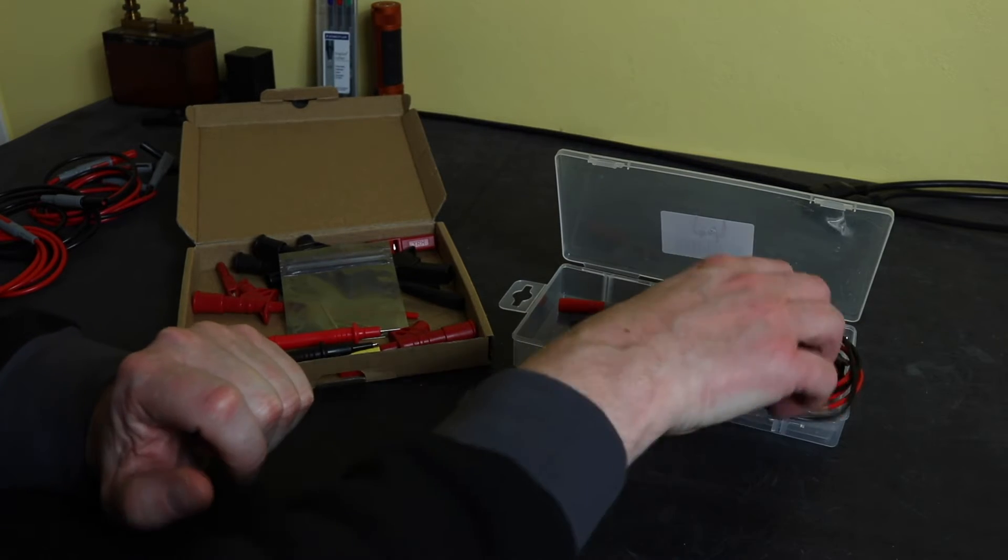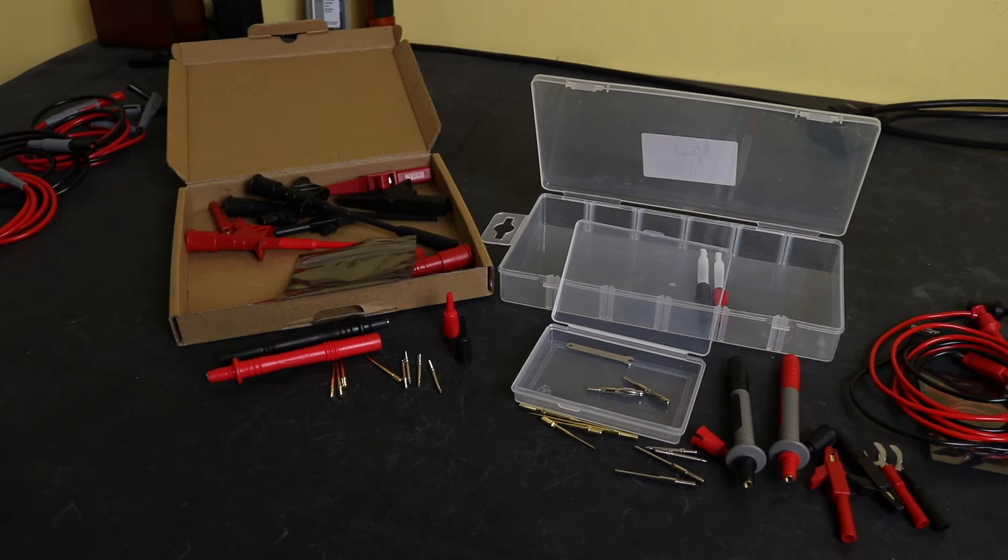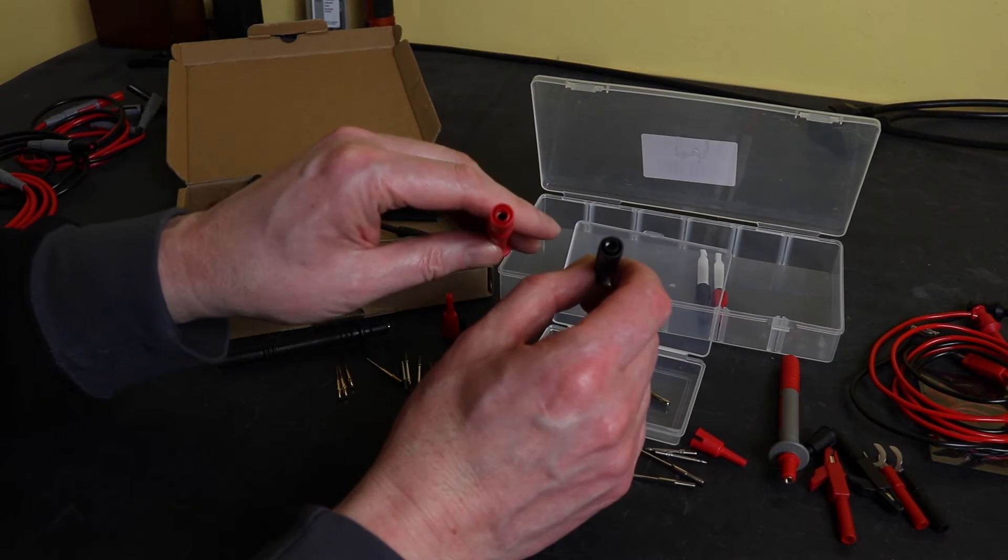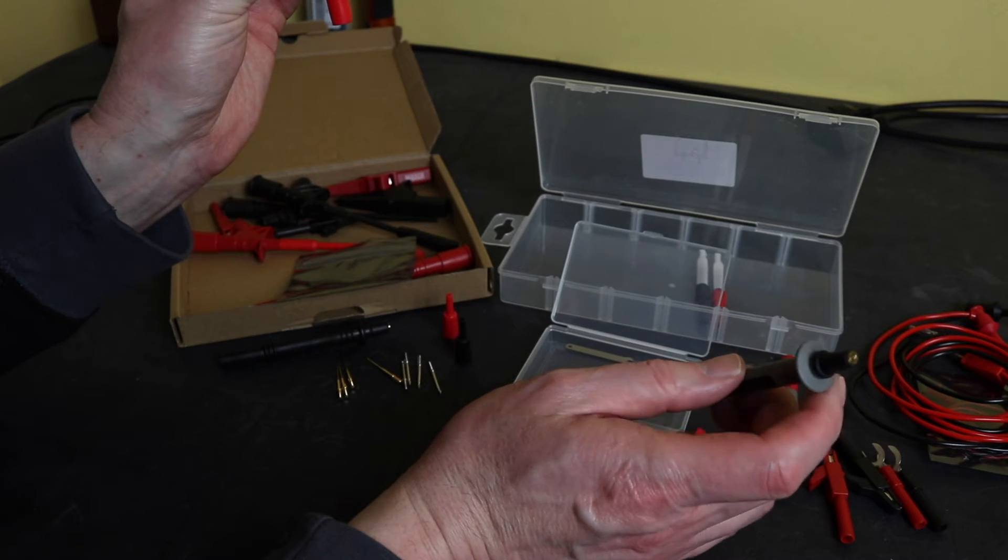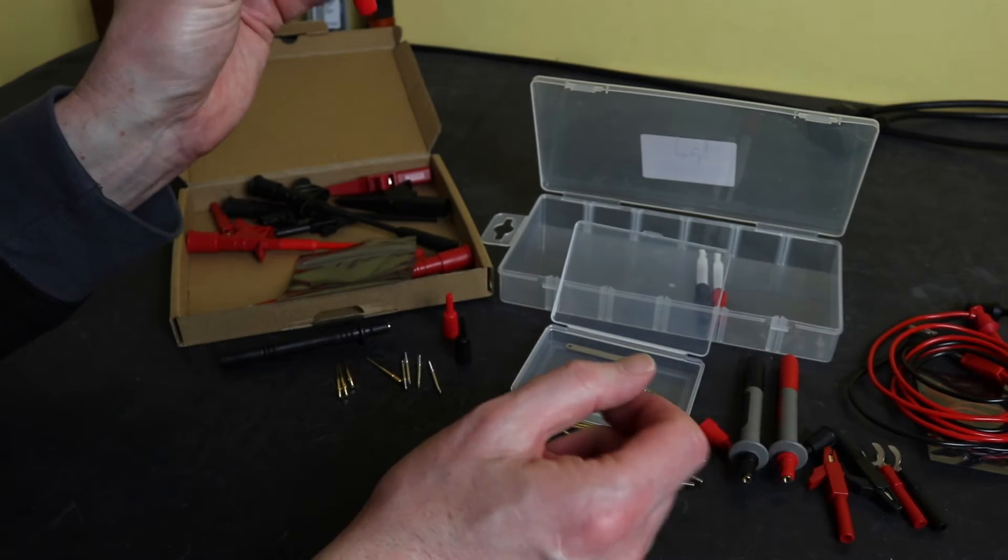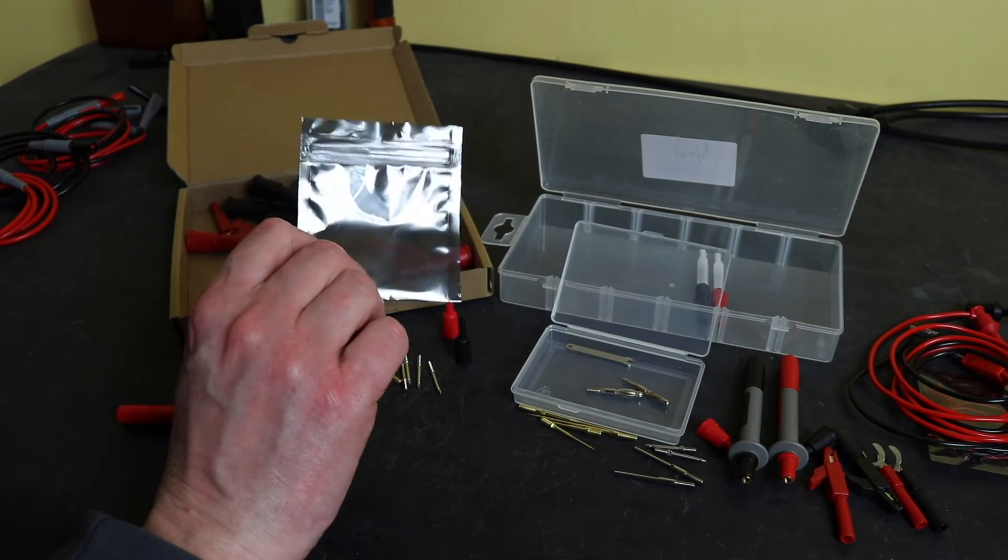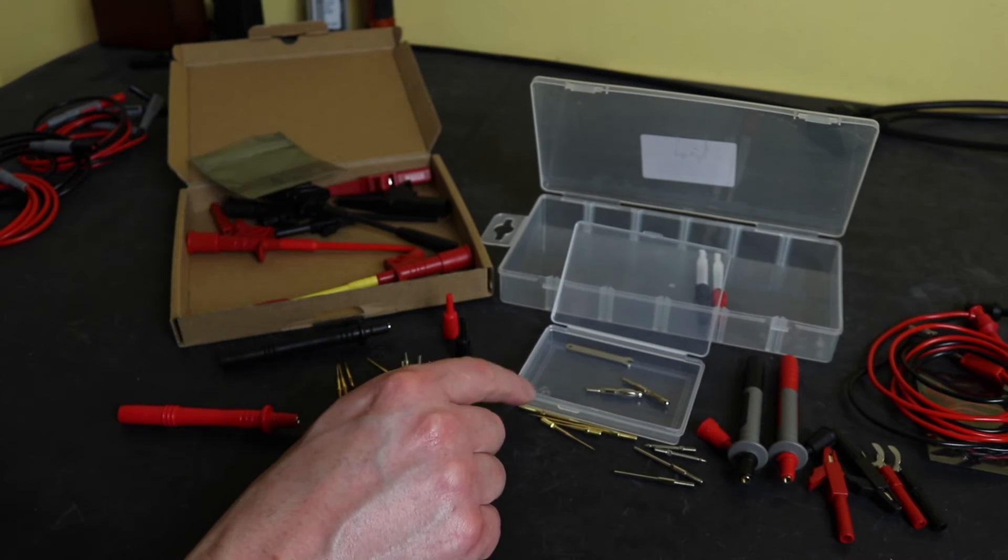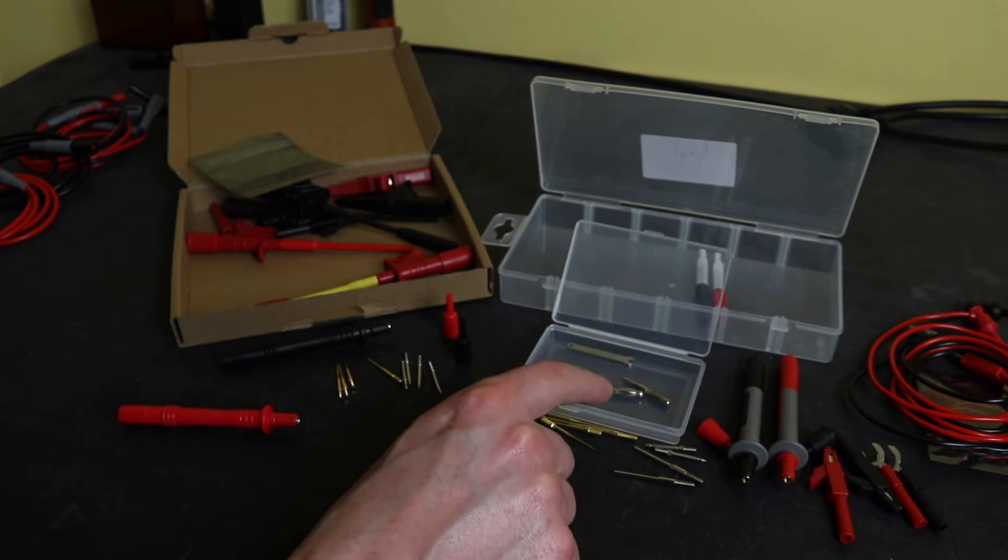In terms of the probes that come with the kits, they are of similar construction. Both of the probes have standard four millimeter sockets on the end, and at the other end they are threaded to accept a number of different tips or adapters. For the set from Prostor, they all come in this little polythene zip-locked bag. For the Clique set, you get this extra little plastic case that sits inside the larger case and contains all the adapters along with a few extra bits and pieces.